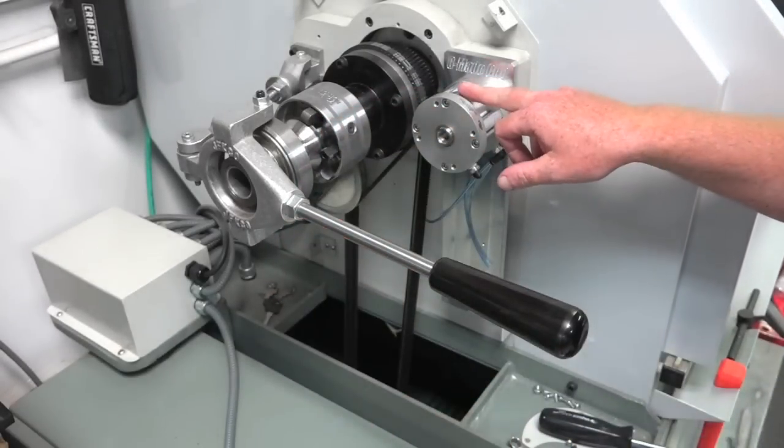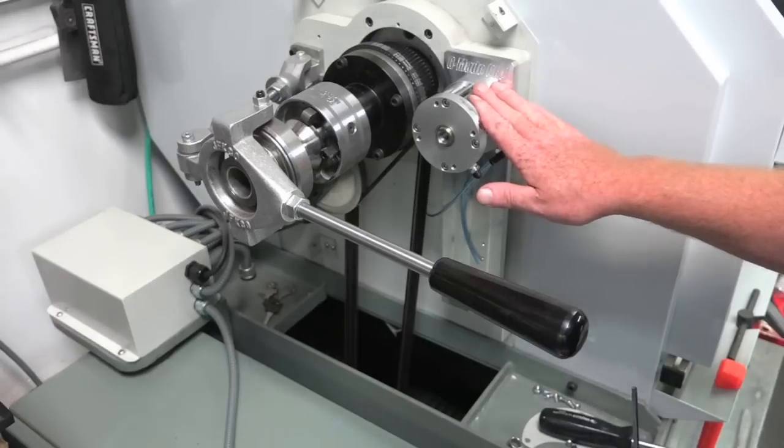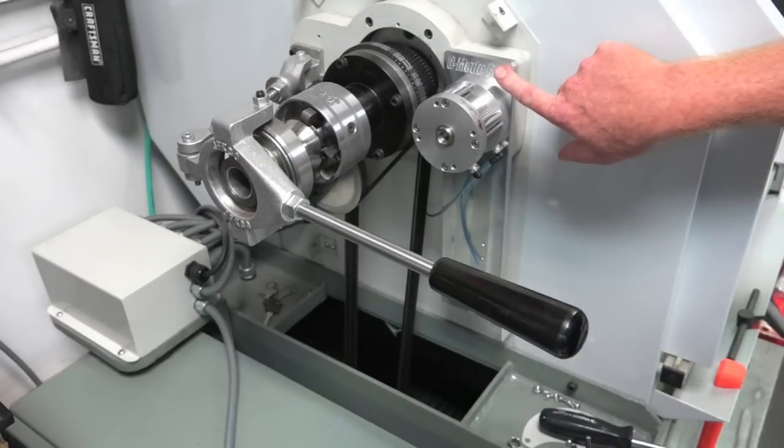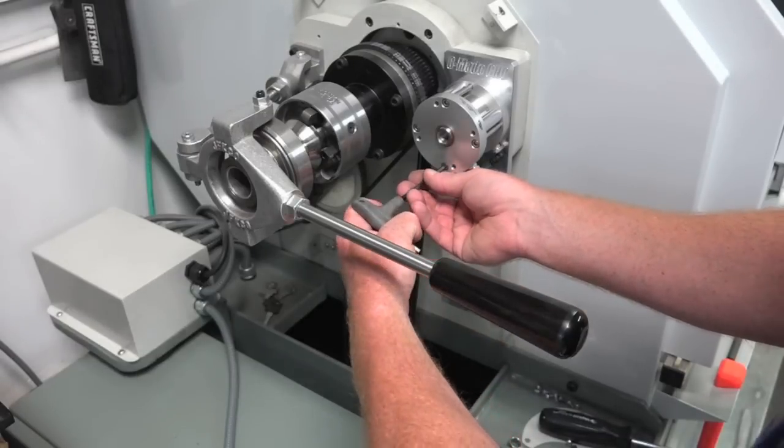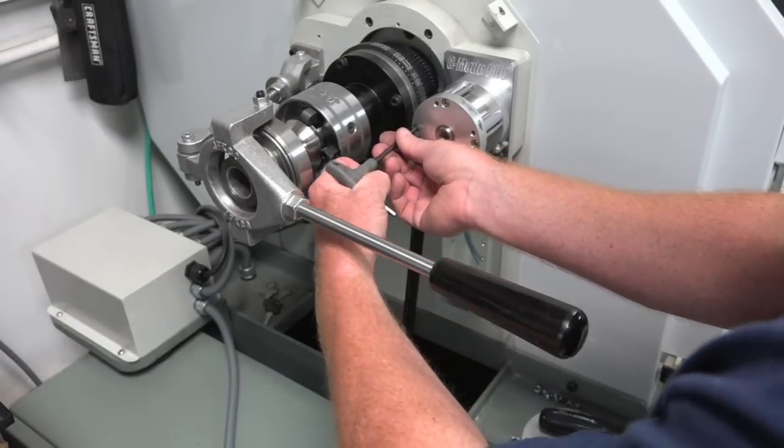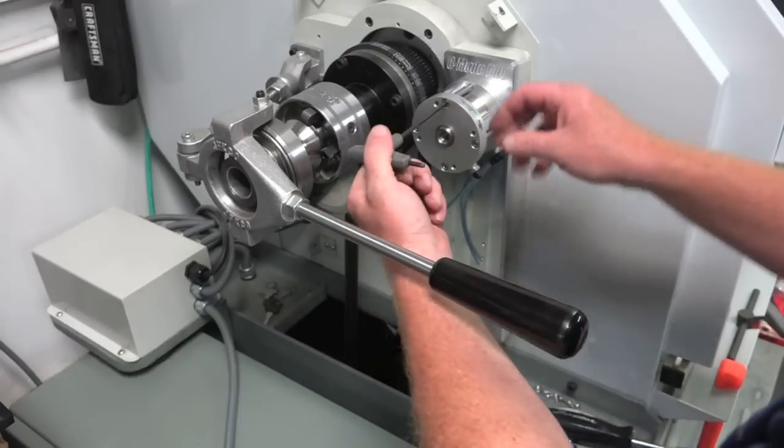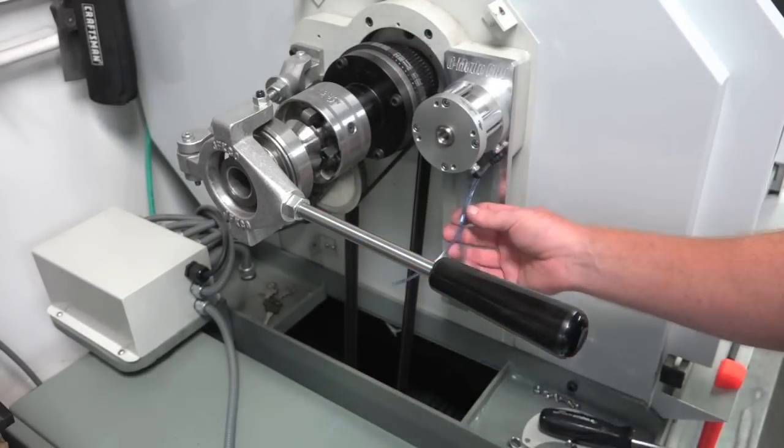And normally I would Loctite these just for good measure. I'm not doing it right now because I still have to get a screw for the back plate, so I will be pulling this off, you know, as soon as I get one. So right now we're just gonna snug it up nice and tight. Good clearance there.